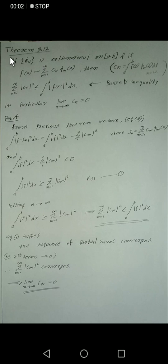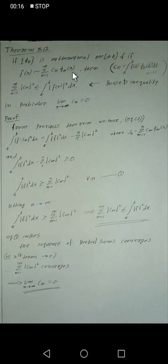This theorem is 8.12. ψ is orthonormal on [a,b]. If f is related to σ from n=1 to infinity of cₙψₙ(x), then σ from n=1 to infinity of cₙψₙ(x) is the Fourier series of f related to ψ. The coefficients cₙ are the nth Fourier coefficients of f related to ψ, given by cₙ = ∫ from a to b of f(t)·ψₙ(t) dt, for n = 1, 2, 3, ...